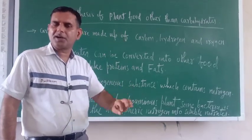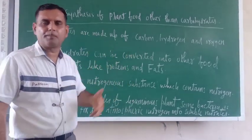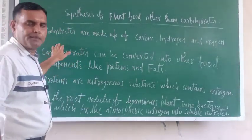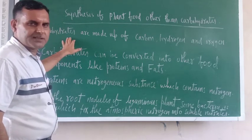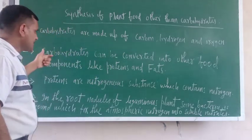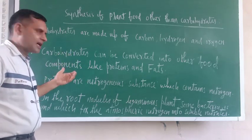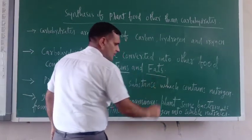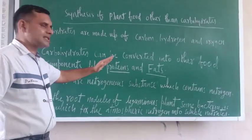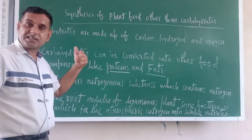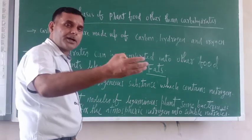The question arises: do plants synthesize only carbohydrate, or do they also synthesize other food substances? Basically, plants synthesize carbohydrate, which is a compound made up of carbon, hydrogen, and oxygen. This carbohydrate can be converted into other food components — proteins and fats. Proteins and fats are essential components of food; they are also nutrients.